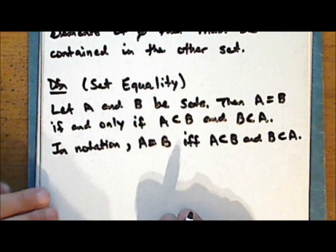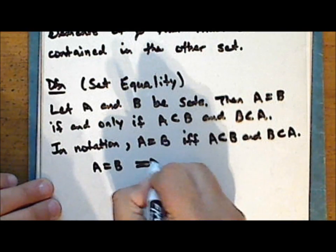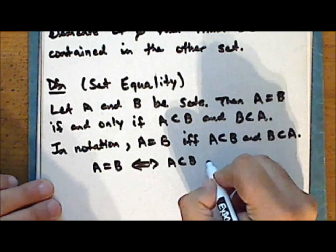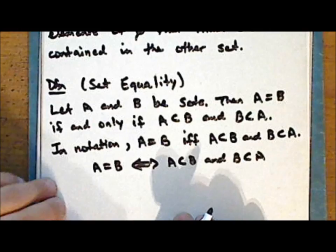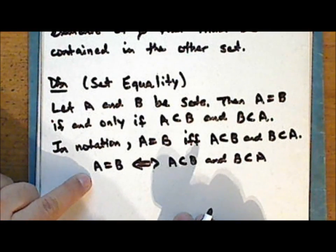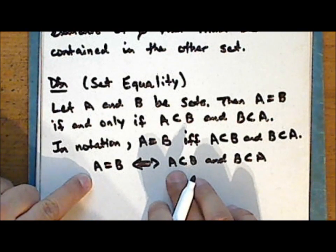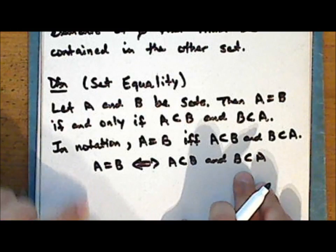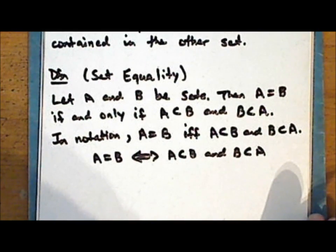Another way you may see this written is A = B with double arrows: A ⊆ B and B ⊆ A. This is read the same way: set A equals set B if and only if both A is a subset of B and B is a subset of A. So in order to prove that two sets are equal, we must demonstrate that each set is a subset of the other.